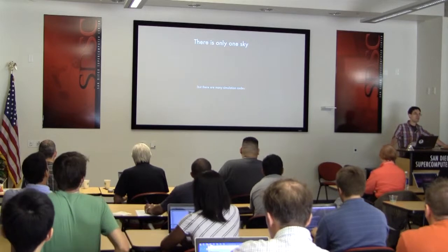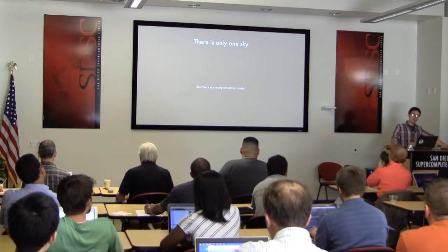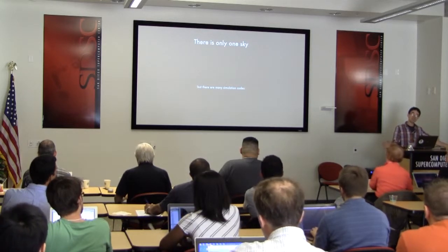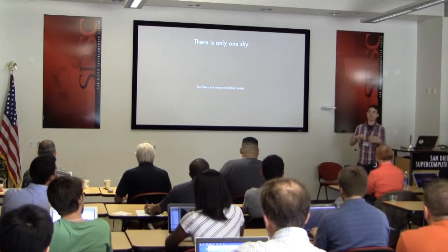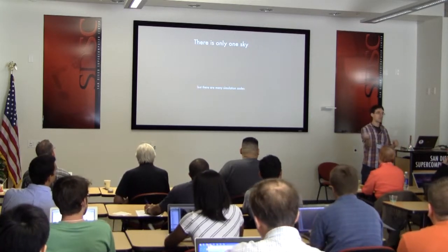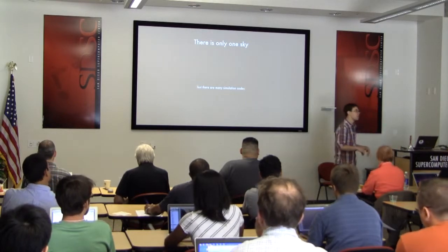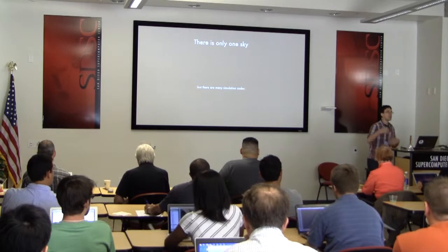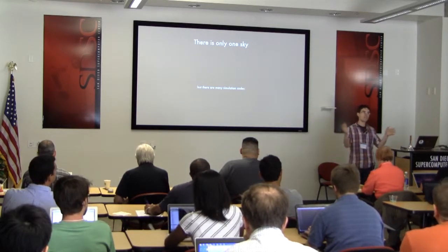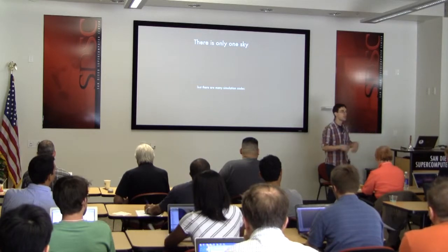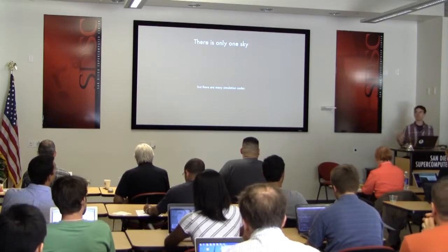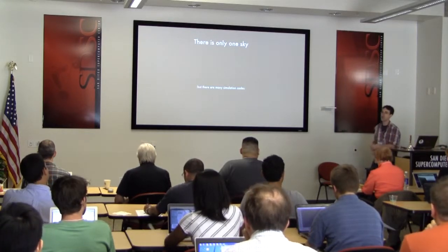Let's start with the prompt: there's only one sky, and so there's only one nature that we can observe, but there are many different simulation codes. There are simulation codes that study particles, that have dark matter discretized as particles, codes that also include fluids discretized as particles, codes with fluids discretized as a moving mesh, or as a fixed grid, or as an adaptive grid. All these different codes have typically had their own specific mechanisms of analysis developed and applied.